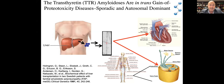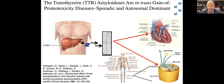The transthyretin diseases are cell non-autonomous, or in-trans gain-of-proteotoxicity diseases. The liver secretes most of the transthyretin tetramer into the bloodstream. The protein can then dissociate, misfold, and aggregate into a spectrum of non-native structures, including amyloid fibrils. A certain number of these non-native structures infiltrate the heart and the nervous system and destroy these tissues, even though those tissues don't make transthyretin. So it's an outside-in proteotoxicity mechanism.